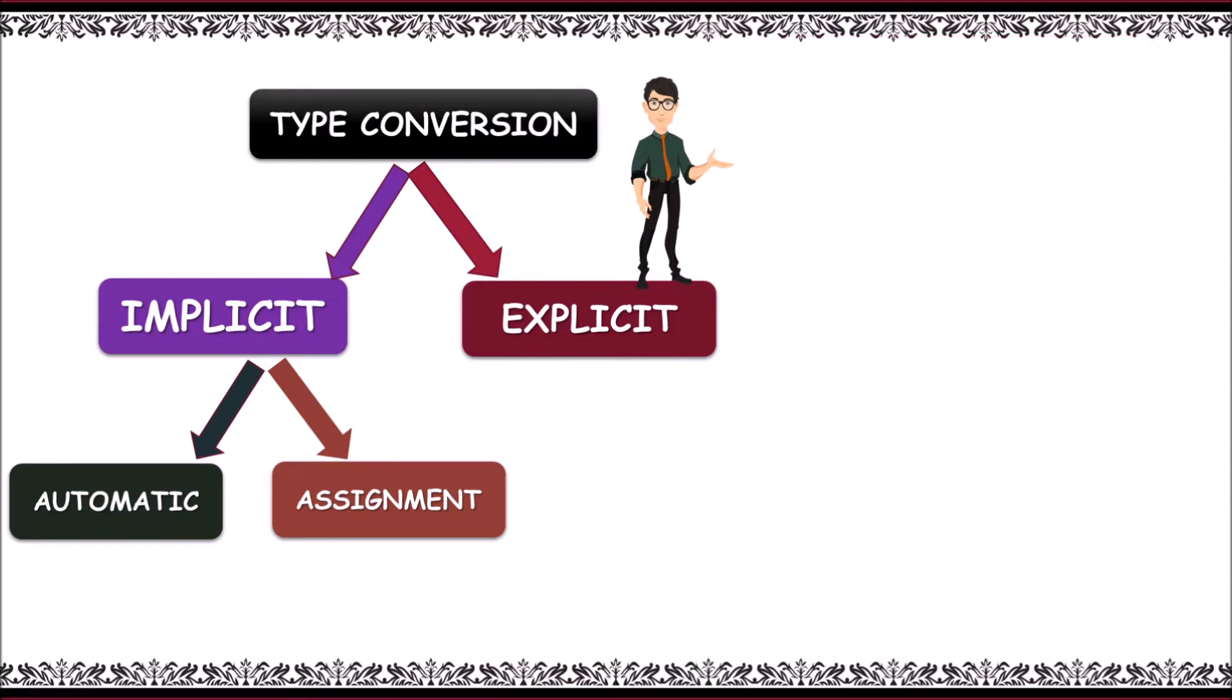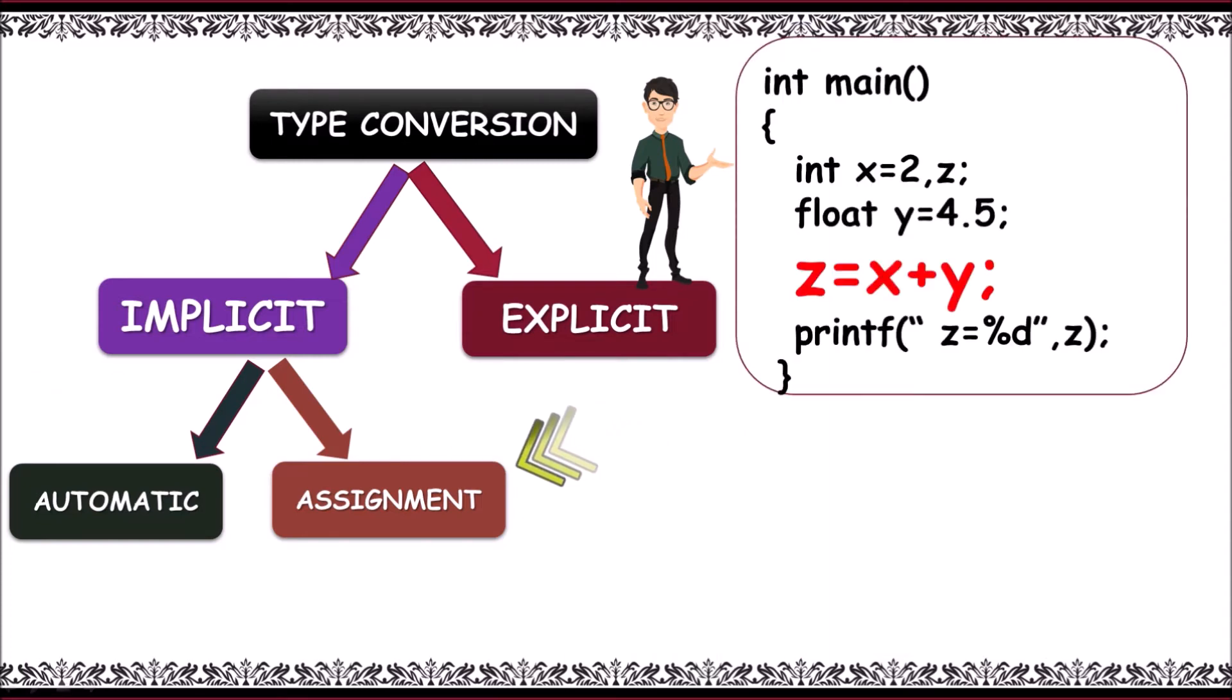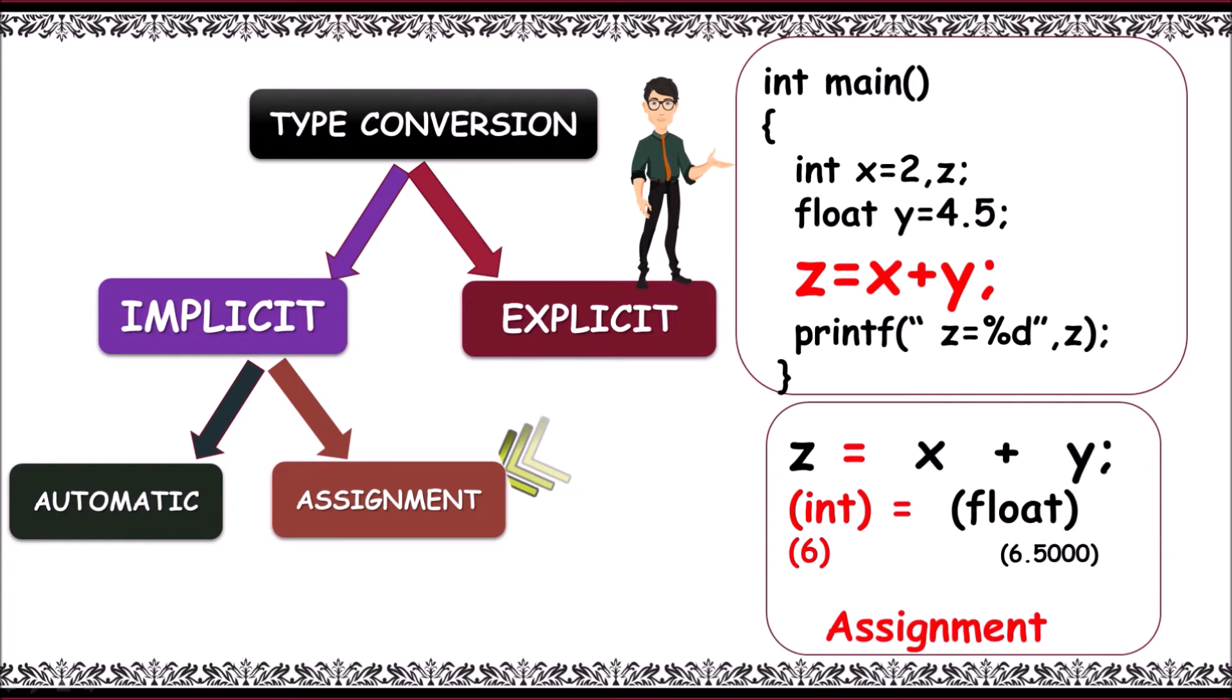And now, for assignment type conversion, irrespective of hierarchy, the data type on the right side is converted to that of left side, if equal to symbol exists. Example, here, z is integer, x plus y result is float. Even float having higher hierarchy, it is converted to int with the help of assignment operator. And the result, 6 is stored, not 6.500.